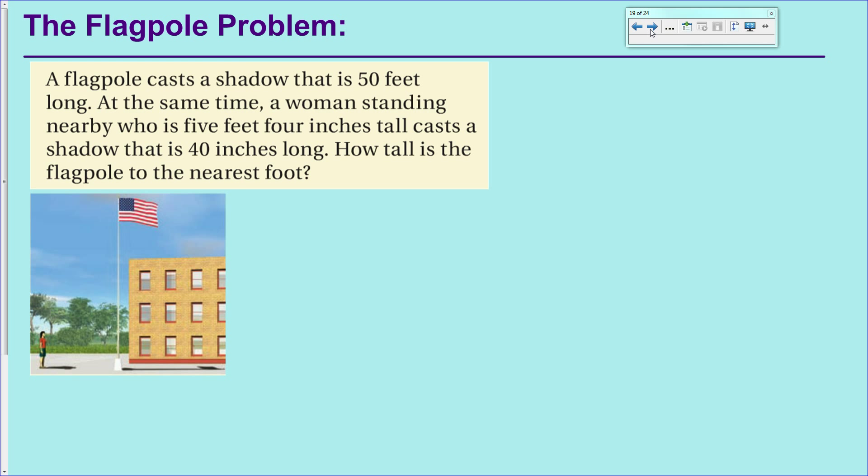The next example and final example I have for you today is one of the great classics, the flagpole problem, where you have some bystander looking up at a flagpole wondering how tall is it. In this case, we have a woman who stands five feet, four inches tall, casting a 40-inch shadow. And then she can go measure the shadow from the flagpole on the ground, and someone measured that to be 50 feet. The question is, how tall is the flagpole?